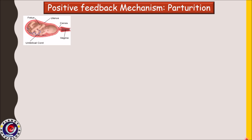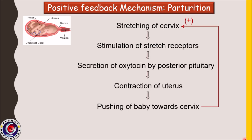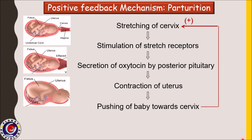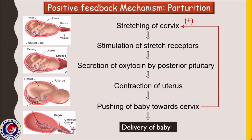Towards the end of pregnancy, when the baby is fully grown, it pushes against the cervix causing it to stretch. This stimulates stretch receptors, which send signals to the hypothalamus to release the hormone oxytocin from the posterior pituitary gland. Oxytocin causes uterine contractions, pushing the baby further toward the cervix, which releases even more oxytocin. This sequence repeats again and again until the baby is delivered.